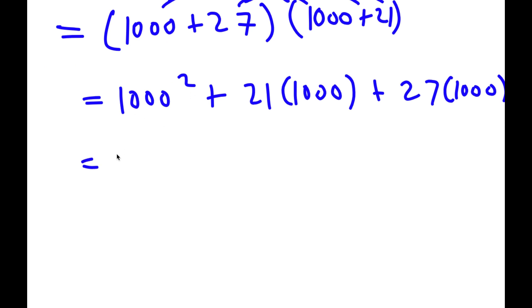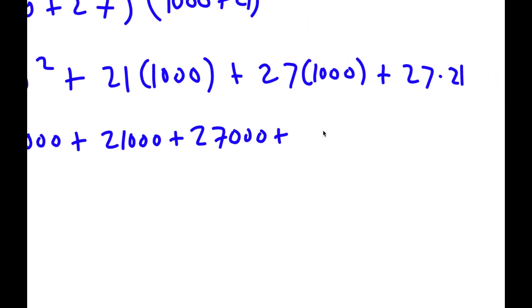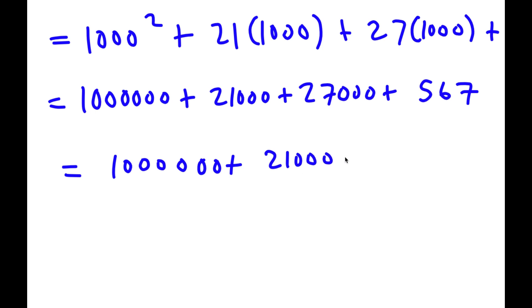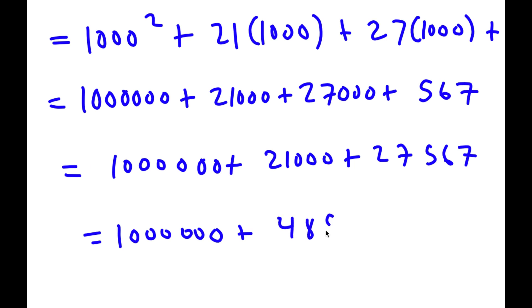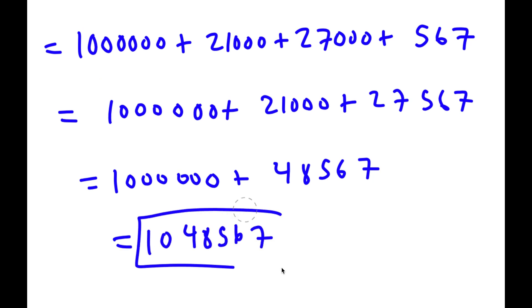1,000 squared is 1,000,000. 21 times 1,000 is 21,000. 27 times 1,000 is 27,000. And 27 times 21 is 567. Adding all of these up: 567 plus 27,000 is 27,567; plus 21,000 is 48,567; plus 1,000,000 gives 1,048,567. That is my final answer.